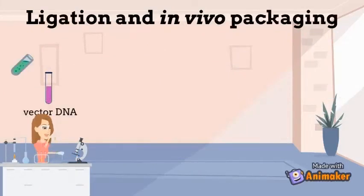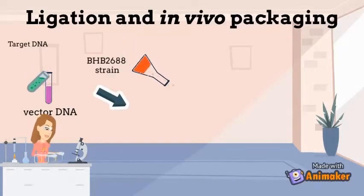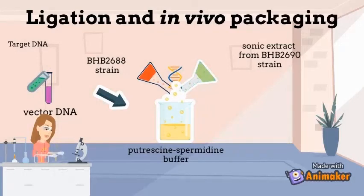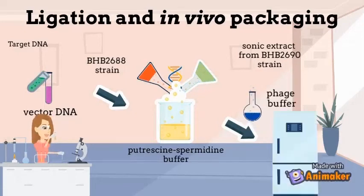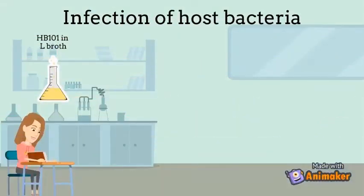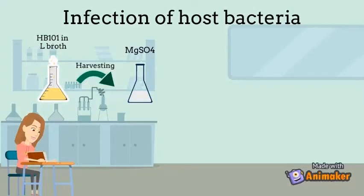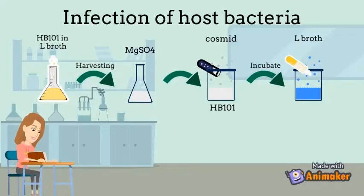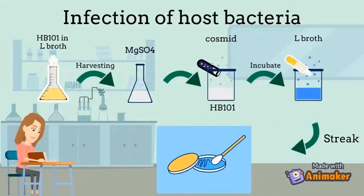For ligation and in vitro packaging, the target DNA was ligated with excess vector mixture. BHB2688 sonic extract from BHB2690 and DNA packaged in putrescine-spermidine buffer to form a freeze-thaw lysate. The packaged cosmids are diluted in phage buffer and stored at 4°C over CHCl3. HB101 is grown in L-broth containing 0.4% maltose. The harvested culture will be resuspended in 2-fold concentration MgSO4. The cosmids are added to HB101 and incubated. L-broth is added and incubated, then the mixture is spread on agar dishes containing ampicillin.